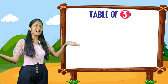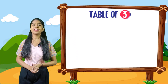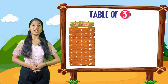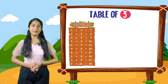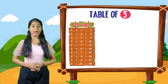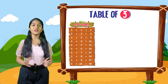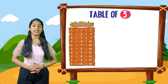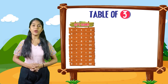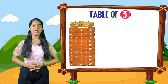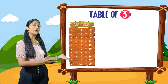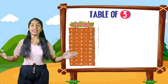So kids, now we will start the table of 3. Let's learn. 3 into 1 is equal to 3. 3 into 2 is equal to 6. 3 into 3 is equal to 9. 3 into 4 is equal to 12. 3 into 5 is equal to 15. 3 into 6 is equal to 18. 3 into 7 is equal to 21. 3 into 8 is equal to 24. 3 into 9 is equal to 27. 3 into 10 is equal to 30.